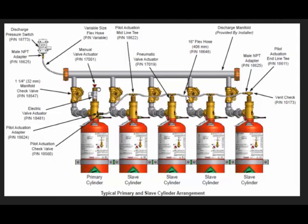This is a flex hose — flexible pipes, which we also call flex hose pipes. Flex hose is 16 inches. This is a male PNT adapter. This is the pilot actuator PNT connection. And this is a vent check. I think you understand everything that is here in English.